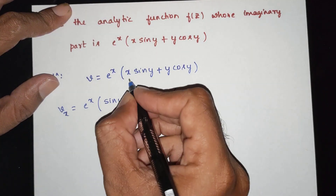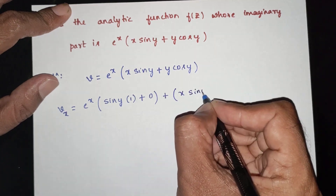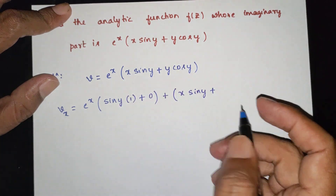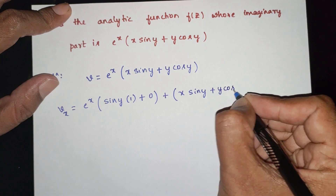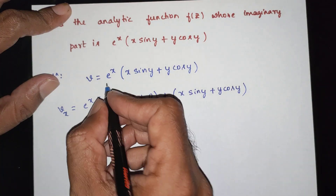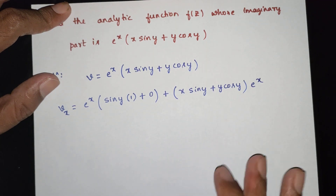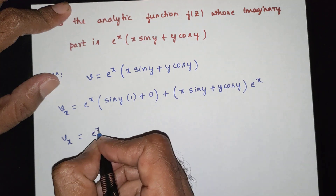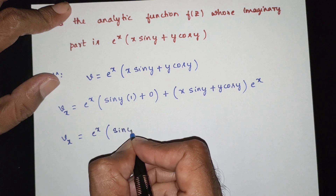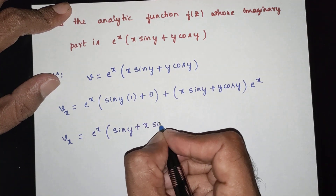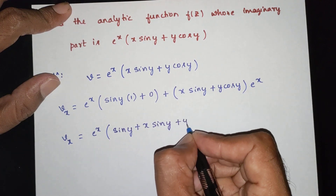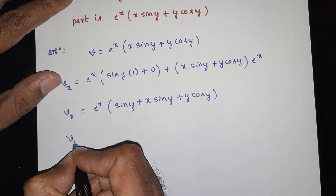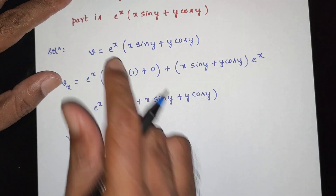Continuing the product rule: plus x sin y term. Here e power x differentiated is e power x. So vx is equal to e power x times sin y, combining terms. Here x sin y gives e power x.